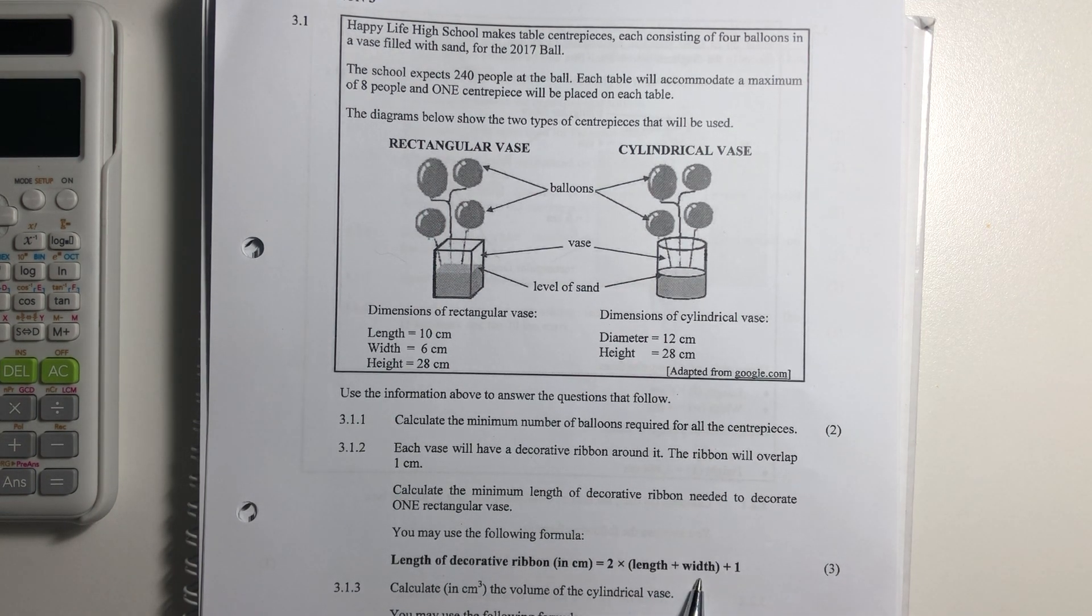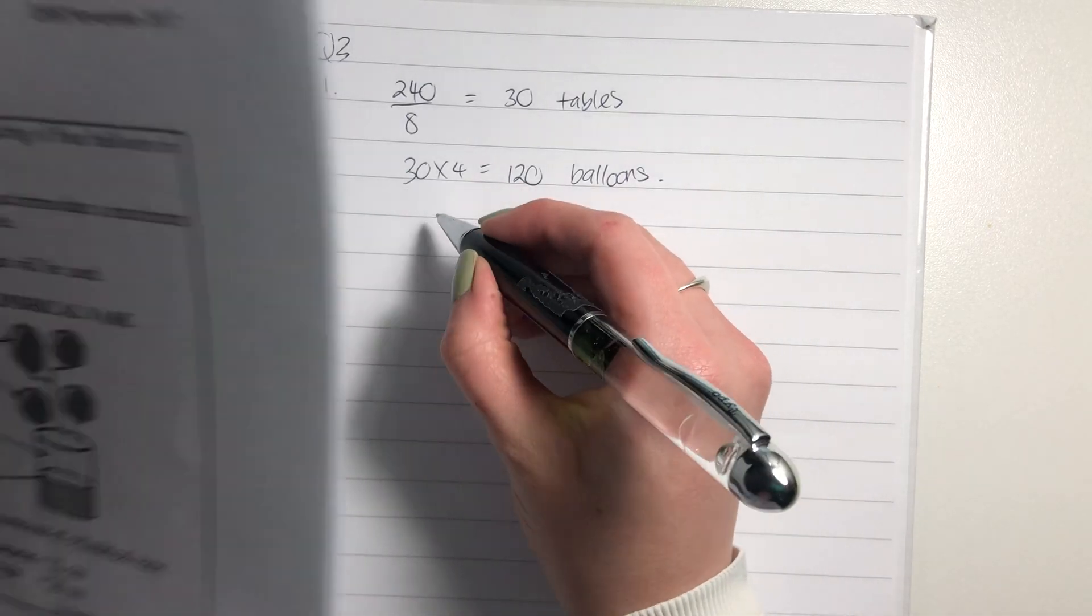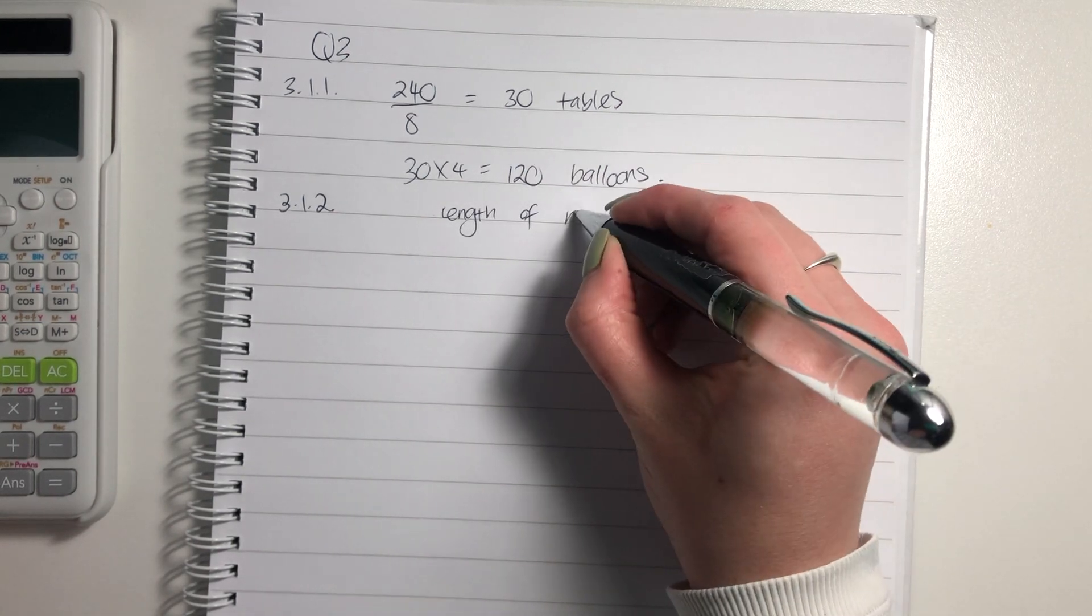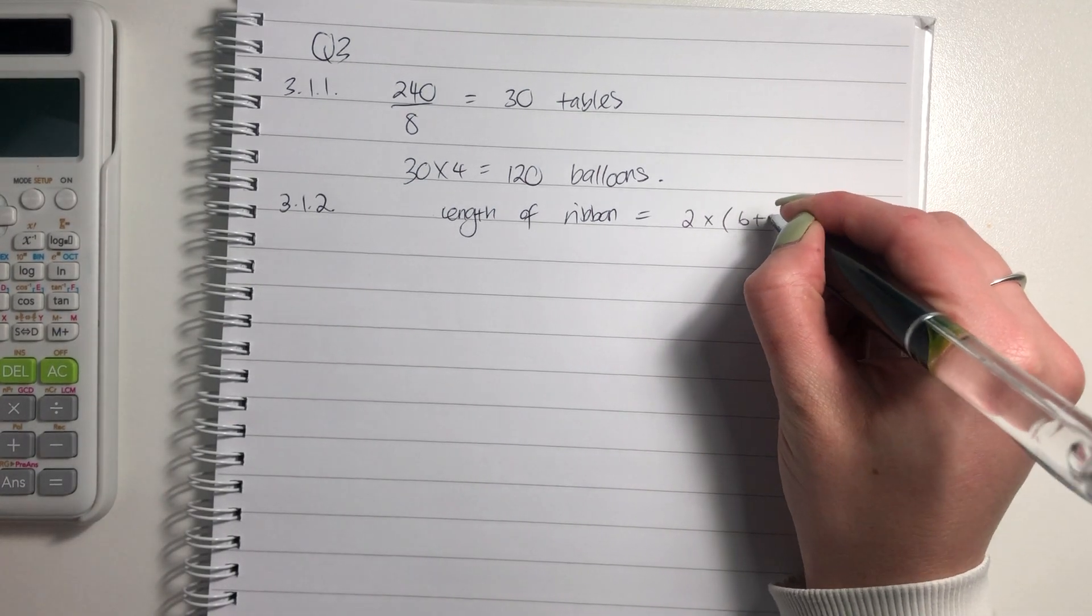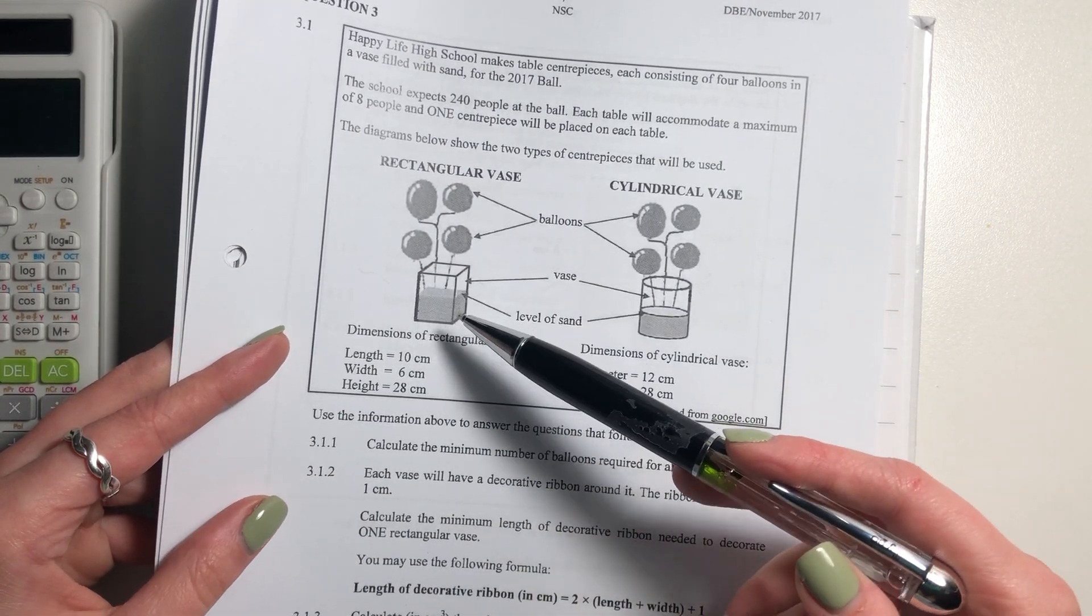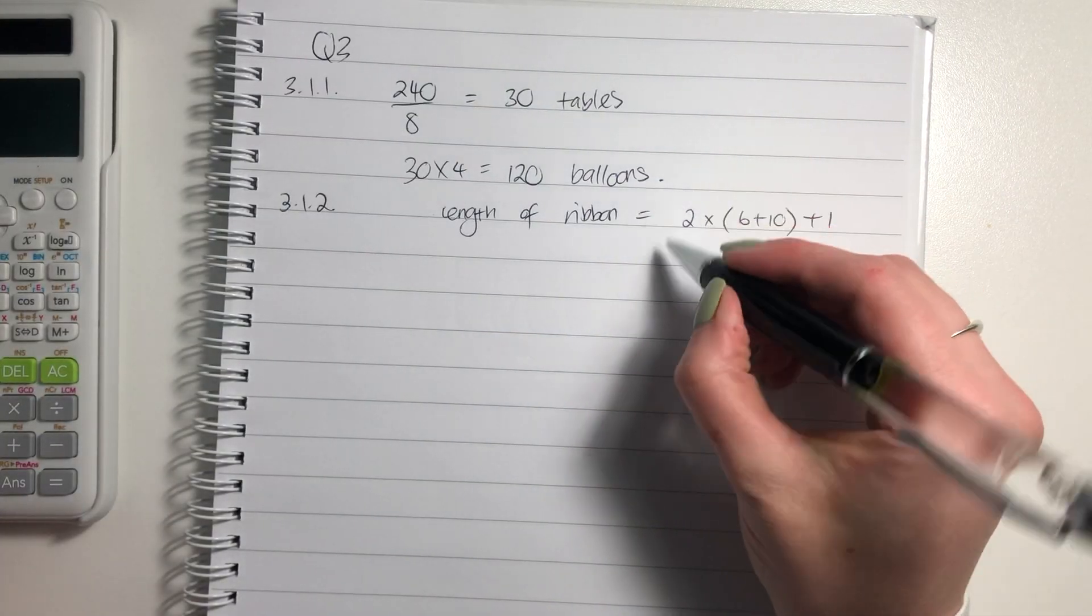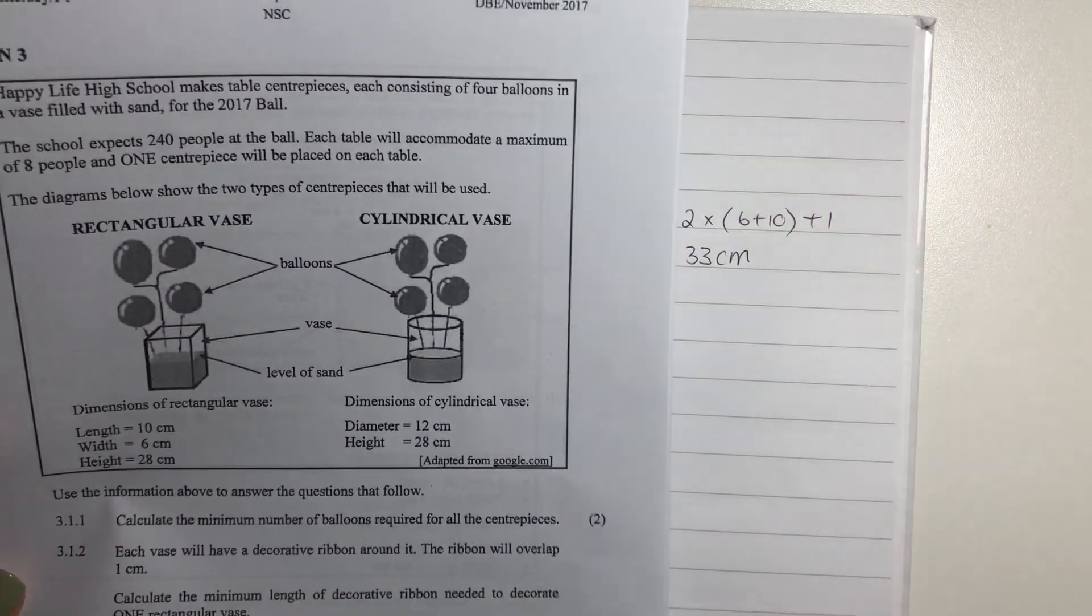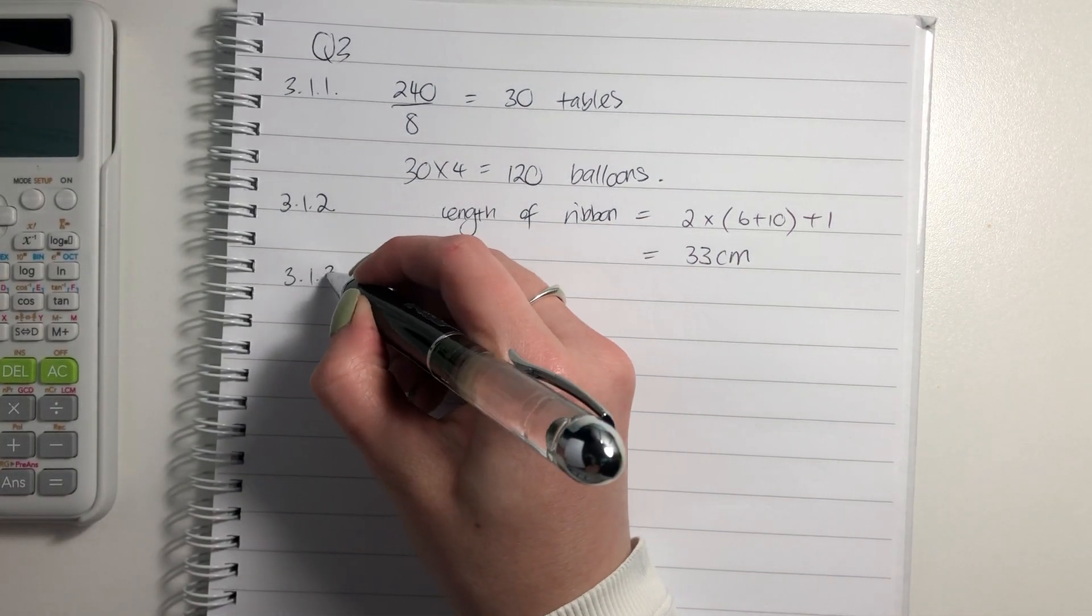It says length of the decorative ribbon, two times the length plus the width, plus one. This is quite easy, because we know that the length is 10, the width is six. So we literally just say length of ribbon equals two times six plus ten, plus one. So six plus ten, that was the length and the width. We're not really interested about the height, because it's not going up or down the rectangular bars. It's only going around. So this, if you put into your calculator, will be 33. Just please remember to put in your centimeters, because it's very easy to forget your measurement and then get penalized for it.